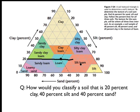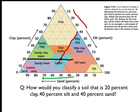It's also asking for 40% silt. Here's silt going down in this direction, so we start our line at 40 and come down in this direction. And then last but not least, we have 40% sand — this is sand going in this direction — so we use 40% sand and come up here where the three lines intersect.